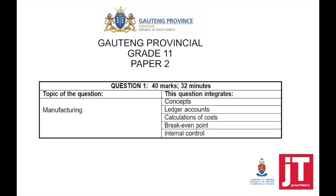Question 1 is 40 marks, 32 minutes. Make sure that you stick to the time allocated per question. This question is on manufacturing and the focus is on concepts, ledger accounts, calculations, off-cost, breakeven point and internal control.